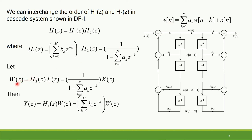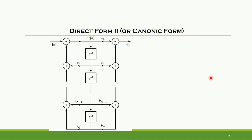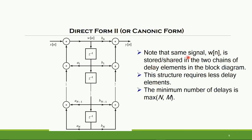So, W of N and W of Z are the Z-transform pair, and the total Y of Z is expressed in terms of delayed W of N terms multiplied with the BK constants. The basic idea behind the interchange of the subsystem form of H of Z is to share the delay elements between the two subsystems. Thus, in the Direct Form 2 implementation, an entire delay chain is shared between the input section and output section, which leads to a reduction in delay units as compared to the Direct Form 1 implementation.